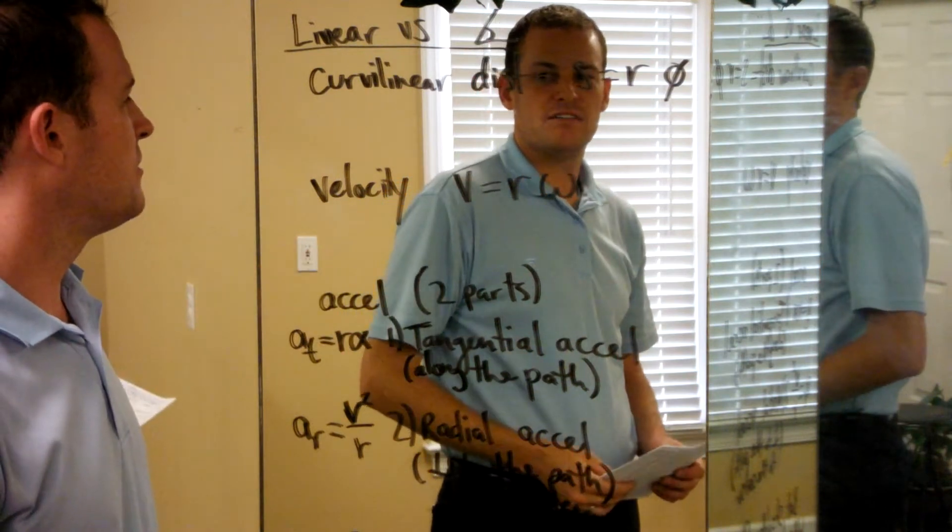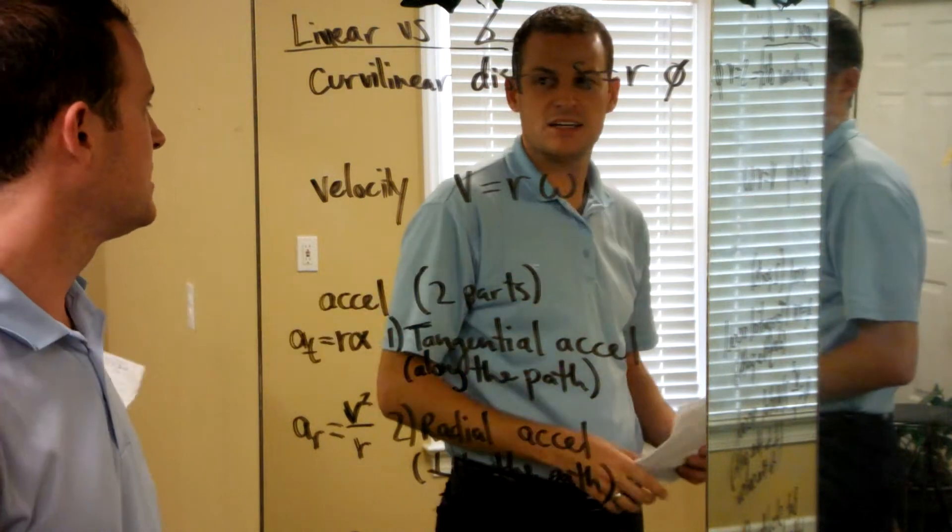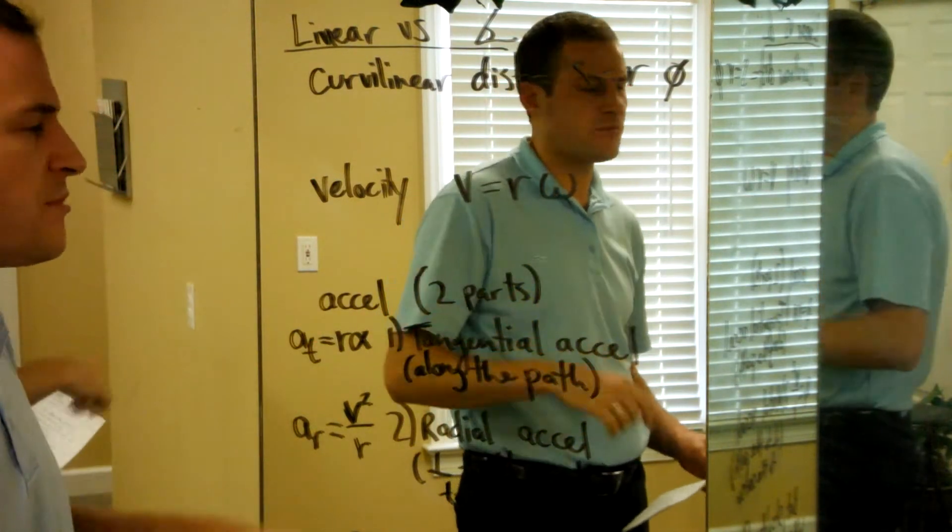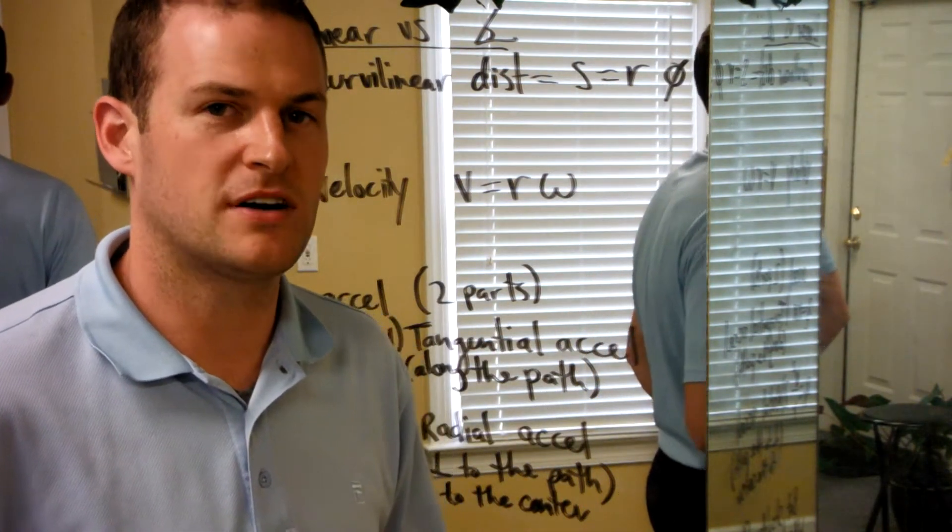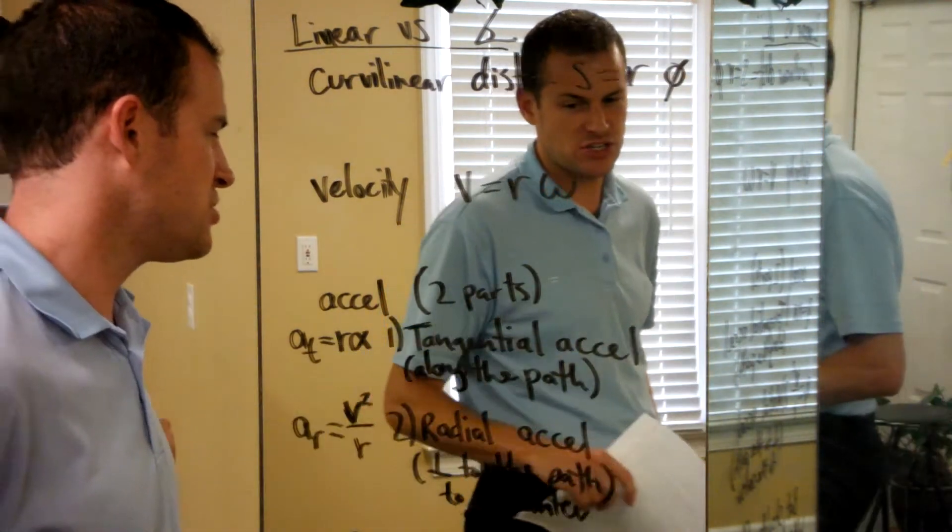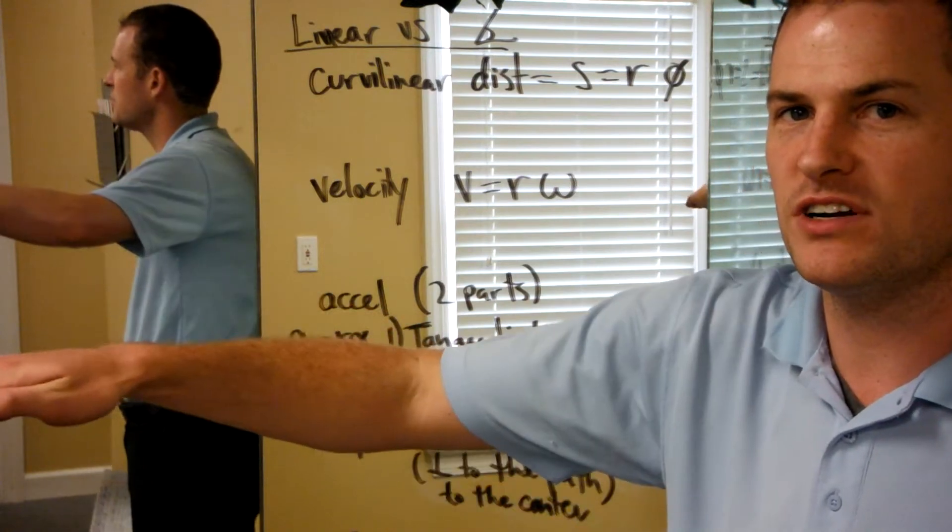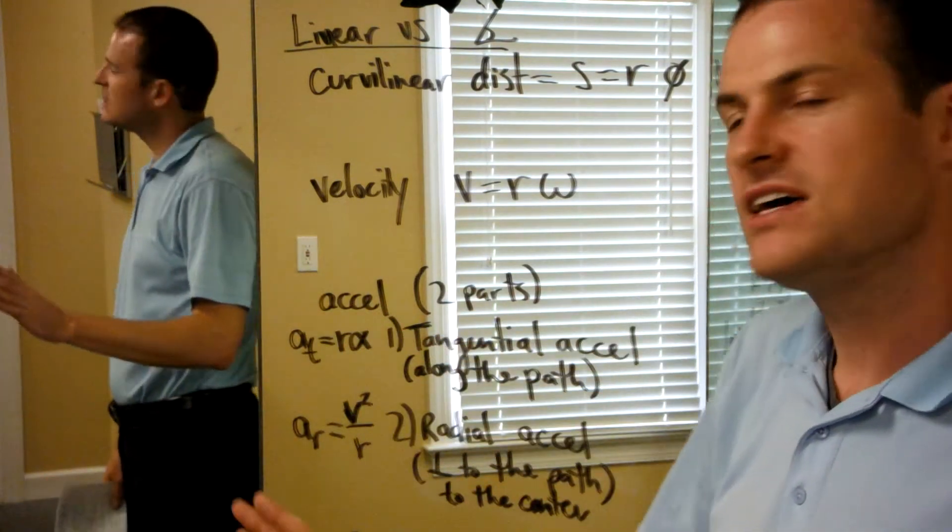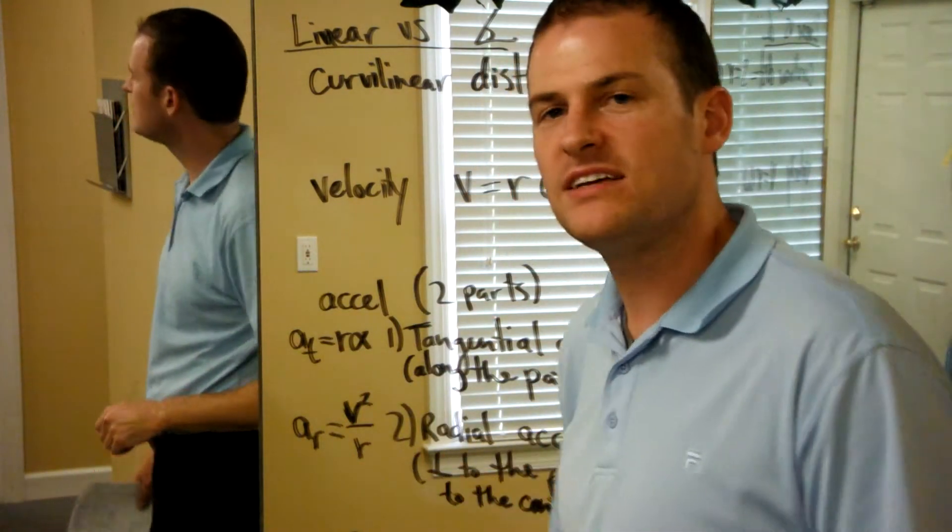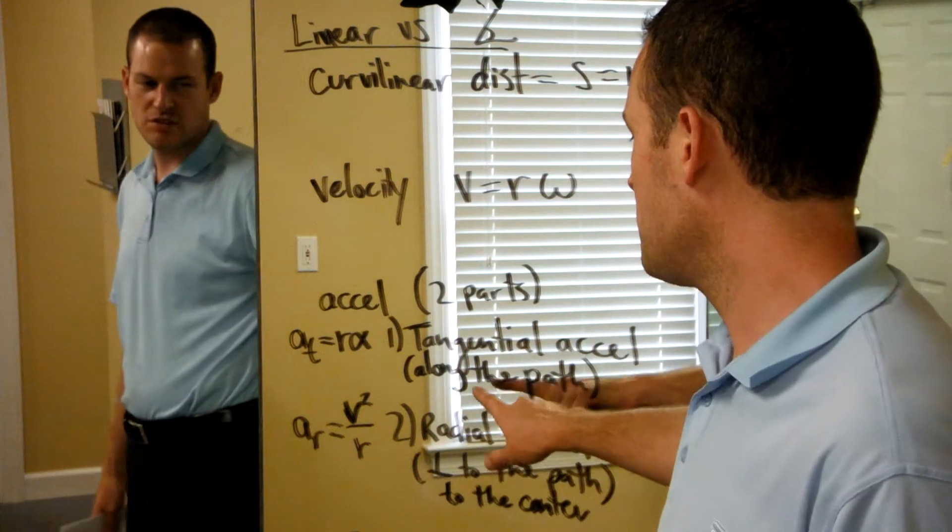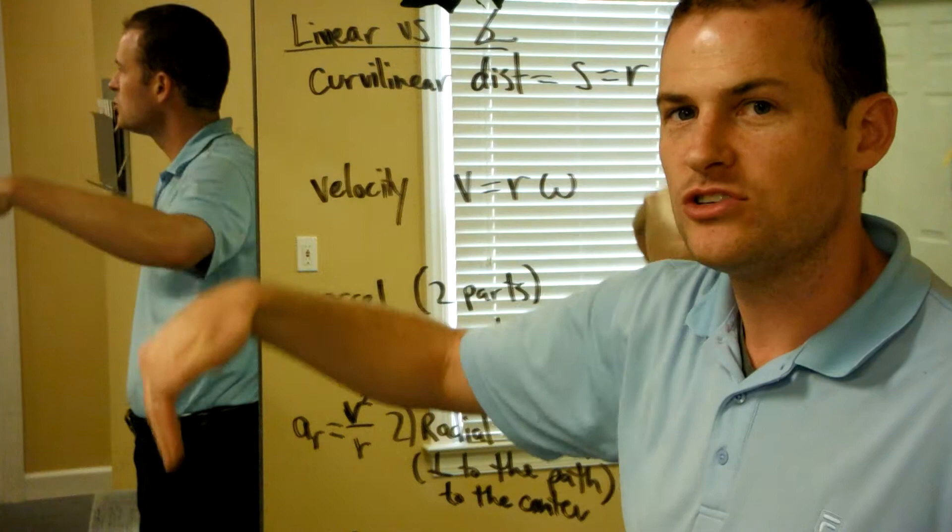When we're talking about velocity, we can convert velocity into the radius times omega. When we talk about acceleration, this is a little bit more complicated. The conversion for acceleration really happens in two parts. We are talking about the acceleration along the path, or the tangential acceleration, along the tangent of the curve. And we are talking about the acceleration perpendicular to the path towards the center, which is referred to as the radial acceleration. So we have both the tangential acceleration along the path, and the radial acceleration towards the center.